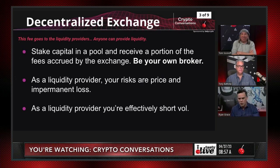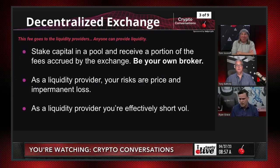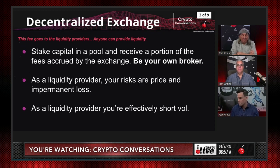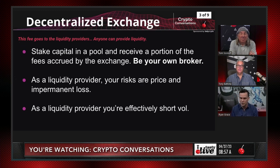I won't get into impermanent loss in depth — just think of it as the difference between if I held the asset and it made a big upside move on one side of the pair, moving very quickly compared to the other. In theory, I could lose money compared to just holding those assets. Your downside is if one of these cryptocurrencies goes to zero. If Ethereum goes to zero, you've lost all of your money.